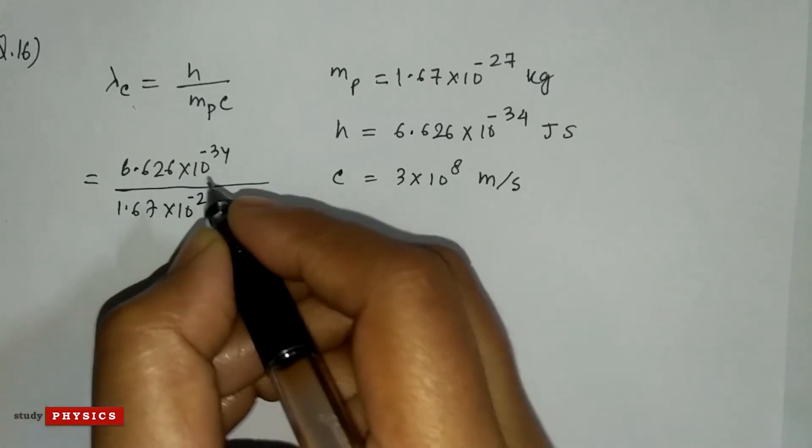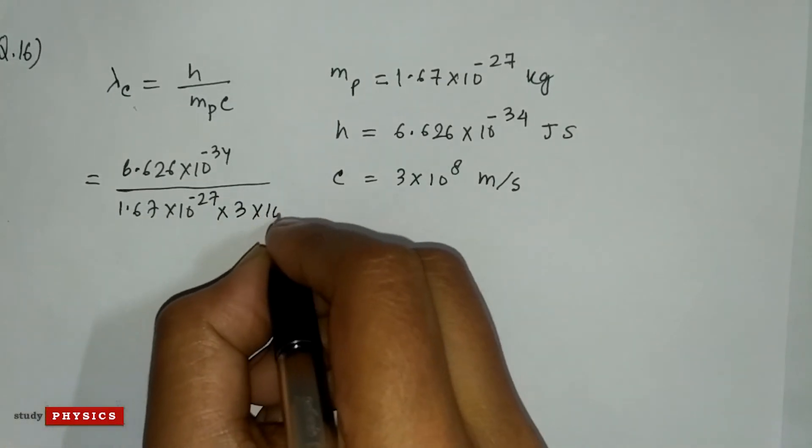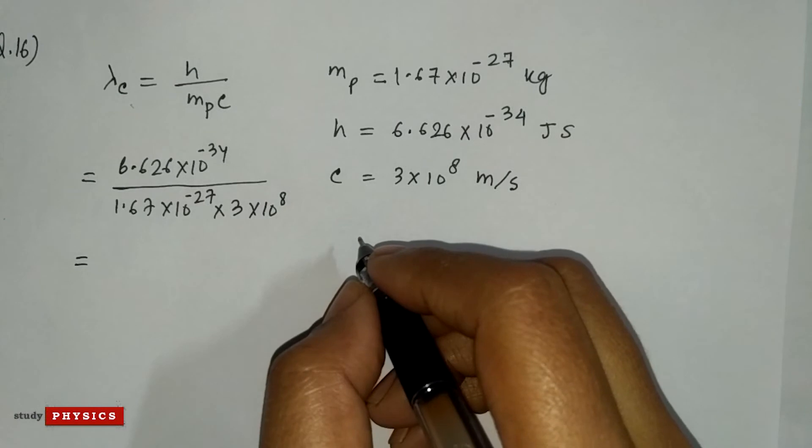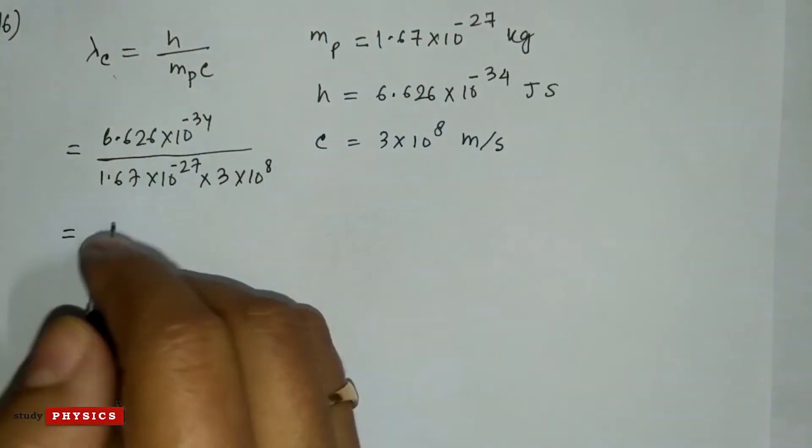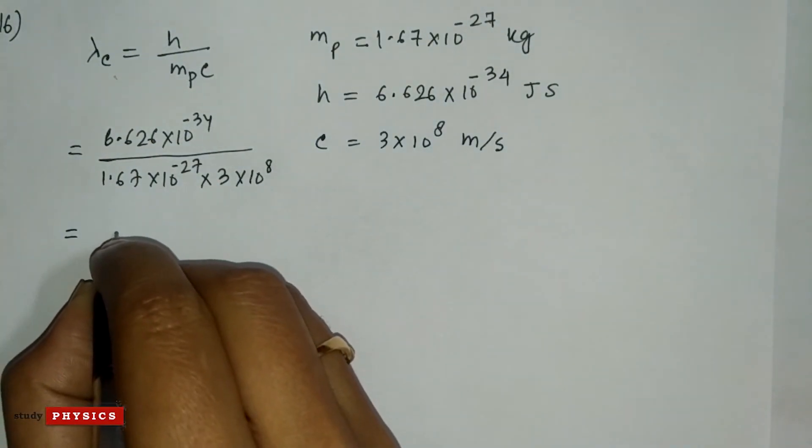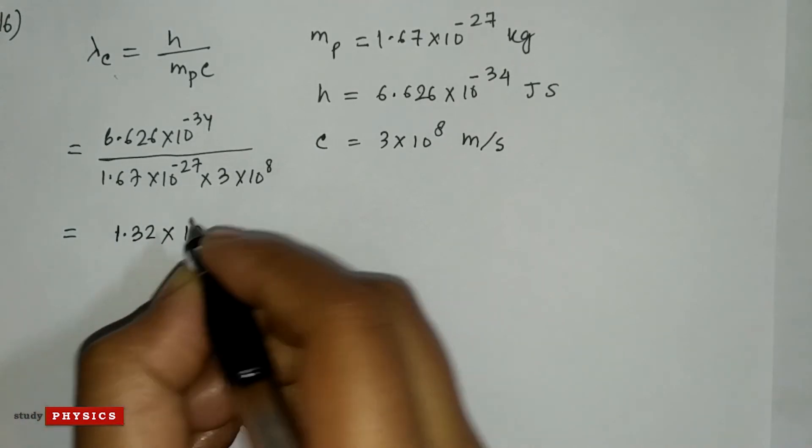After calculating this, we'll get 1.32 into 10 to the power minus 15 meter.